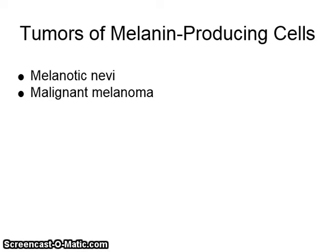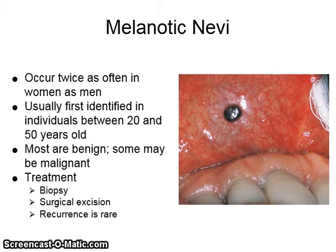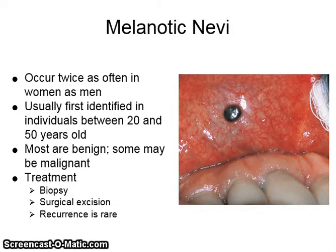Tumors of melanin-producing cells include melanotic nevi and malignant melanoma. Melanotic nevi may refer to either a developmental tumor of melanocytes or a pigmented congenital lesion. They can arise on the skin or the oral mucosa. Intraoral tumors consist of tan to brown macules or papules, occurring most often on the hard palate or buccal mucosa. Melanotic nevi occur twice as often in women as in men, and are usually first identified in individuals between 20 and 50 years old. Most are benign, but some may be malignant. They are treated with biopsy and surgical excision; recurrence is rare.